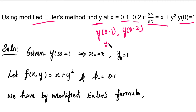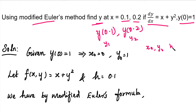We need to solve the y1 value and y2 value. We need to solve this problem using a shortcut method. We need to identify the x0 value, y0 value, and f0 value — these three values. We need to solve the x0 and y0 values.